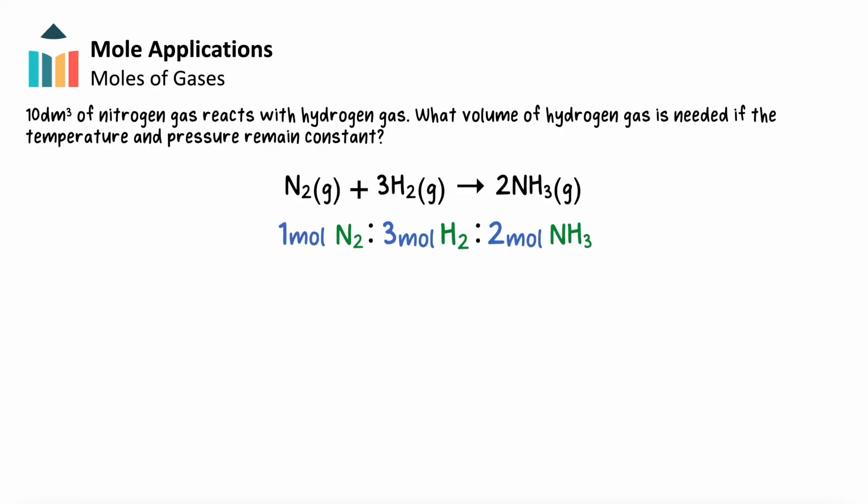Instead of using moles, we can represent the reaction ratios within the equation using volume. This allows us to solve the problem just as before, where we can use our reaction ratio between nitrogen and hydrogen to find the volume of gas needed. We see that for every 1 decimeter cubed of nitrogen that's reacted, we need 3 decimeters cubed of hydrogen. So, 10 decimeters cubed of nitrogen gas will require 30 decimeters cubed of hydrogen gas.